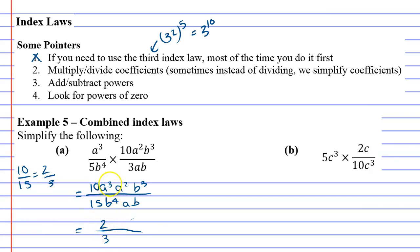And then I want to do step 3, which is to add and subtract powers. For instance, I've got a to the power of 3 plus 2, which is a to the power of 5. And then looking at the bottom, the b's have a power of 1, so b to the power of 4 plus 1 is b to the power of 5. And we also have a to the power of 1. We're combining them, simplifying, just doing one little step at a time.